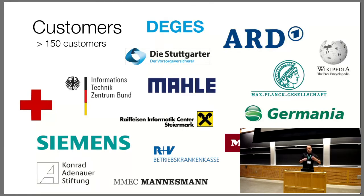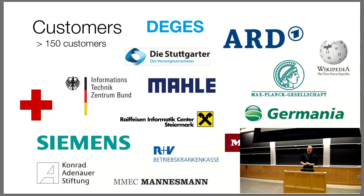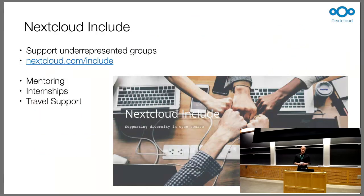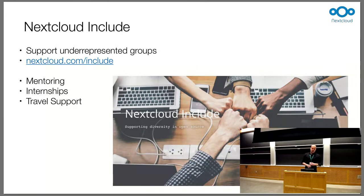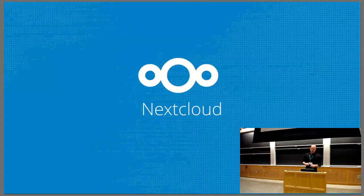As a company, we have a lot of big customers who pay us for AGPL software — not for the software license itself, because we don't sell any licenses, but for the subscription around it. We have the German government using us, the Red Cross, the University of Hawaii, and a lot of others who buy subscriptions from us. We also launched an Include project — a diversity project — last fall. I'm happy that I won an innovation prize and directed it into this project where we support underrepresented groups, offering mentoring, internships, travel support, and other things.